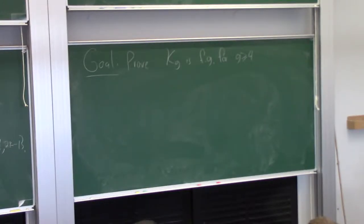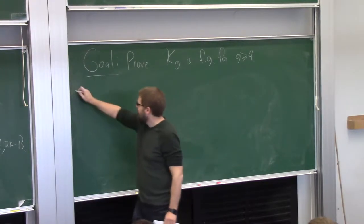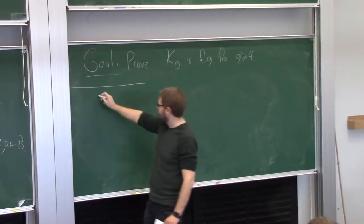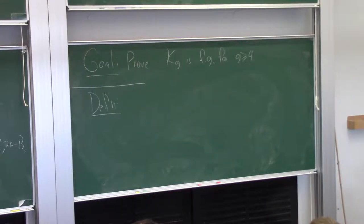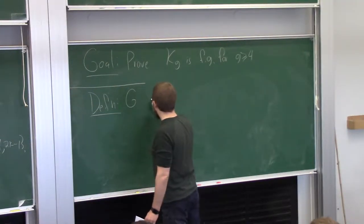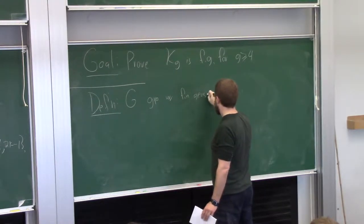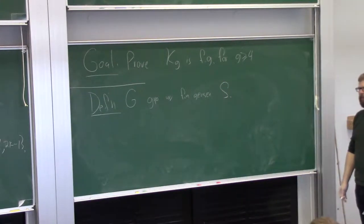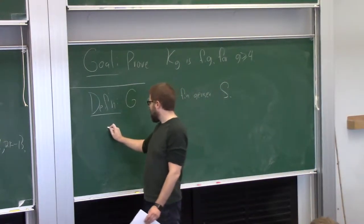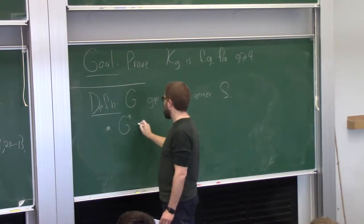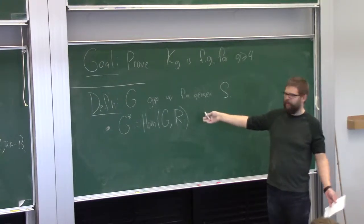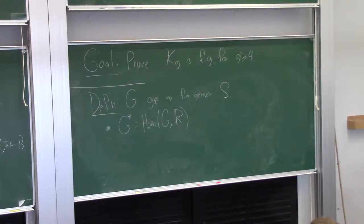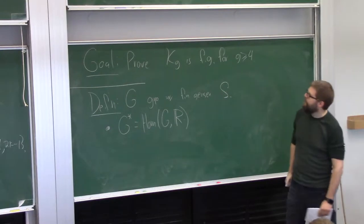The main tool is the theory of BNS invariants — BNS stands for Bieri, Neumann, and Strebel. Let G be a group with a finite generating set S. I want to talk about characters of this group, which I'll denote G*: that's just Hom(G, R), a finite-dimensional real vector space. The BNS invariant, which is the main tool we'll use, is a certain subset of this. Here is the definition: sigma(G) is the set of all rho in G* such that the subgraph of the Cayley graph of G spanned by elements g with rho(g) ≥ 0 is connected.